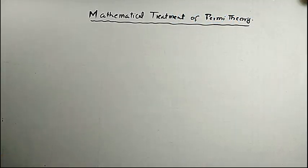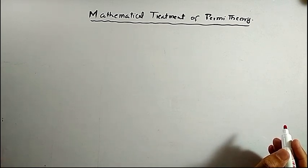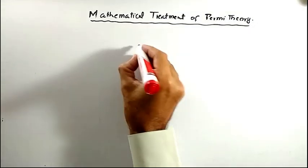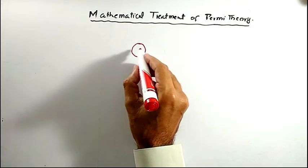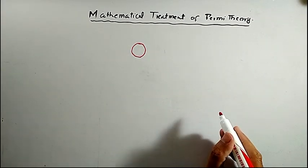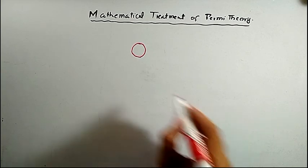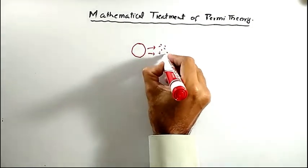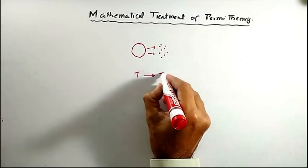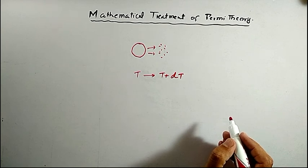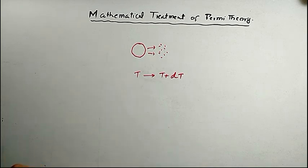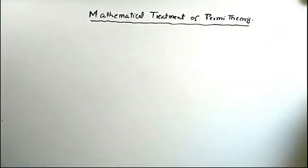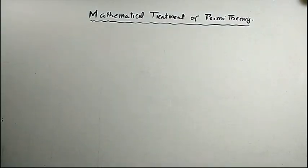In this lecture we talk about the mathematical treatment of Fermi theory. We start by considering a radioactive nucleus that emits beta particles and changes into a daughter nucleus. If beta particles have energies in the range T to T plus delta T, then the probability of nuclei changing from parent to daughter through beta decay in unit time can be written as a decay probability relation.